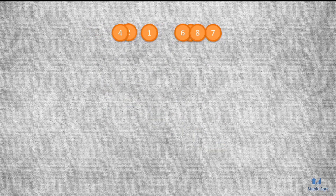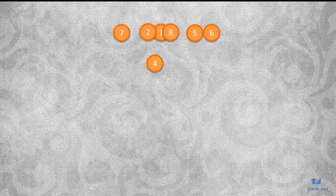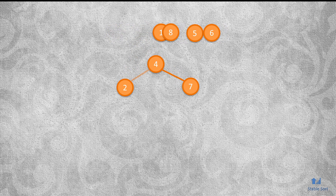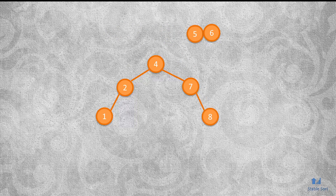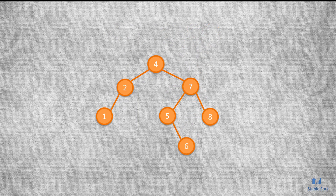One thing we could do is first shuffle the dataset randomly. With a decent shuffle, you'd expect to get a reasonably balanced tree — it probably won't be perfectly balanced, but good enough. But what if you don't have all the values at the start of the construction? And what if, as time goes on, more nodes need to be added or deleted from the tree?